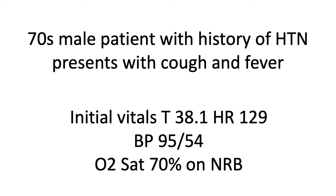Let's use an example patient case. The details of this case have been changed to protect the anonymity of the patient. We have a 70-year-old male with a history of hypertension who presents with cough, fever, and shortness of breath. Initial vital signs: the patient is febrile with a temperature of 38.1, tachycardic at 129, blood pressure is 95 over 54, and oxygen saturation is 70% on a non-rebreather.